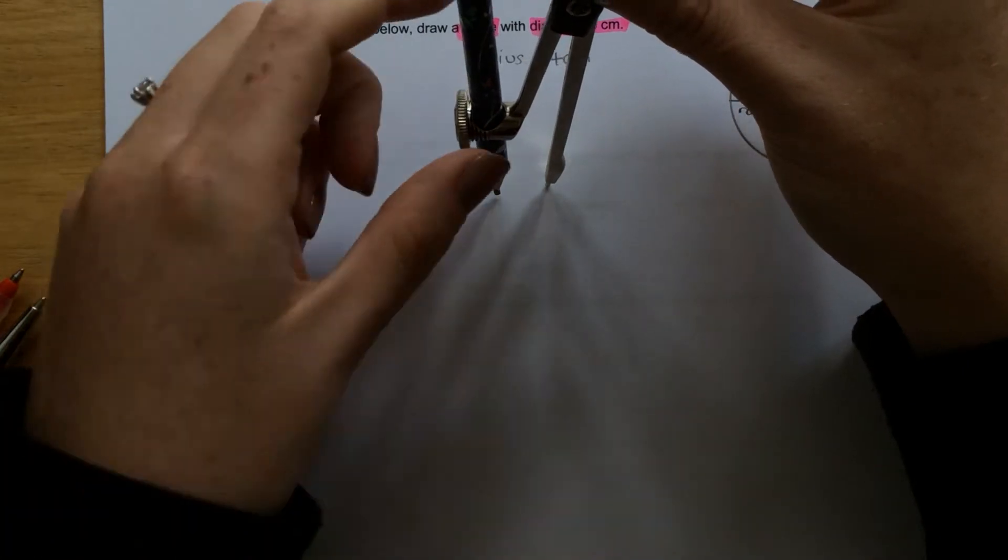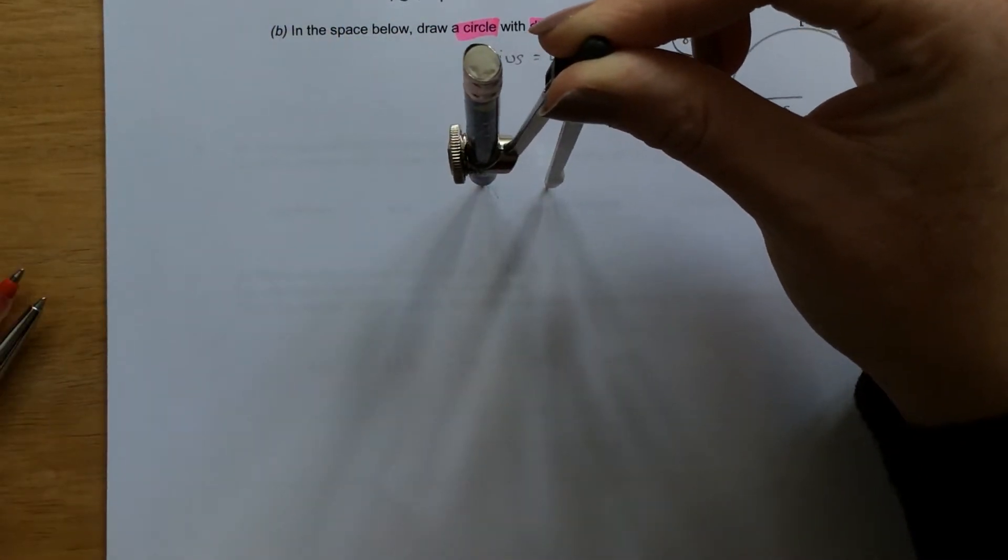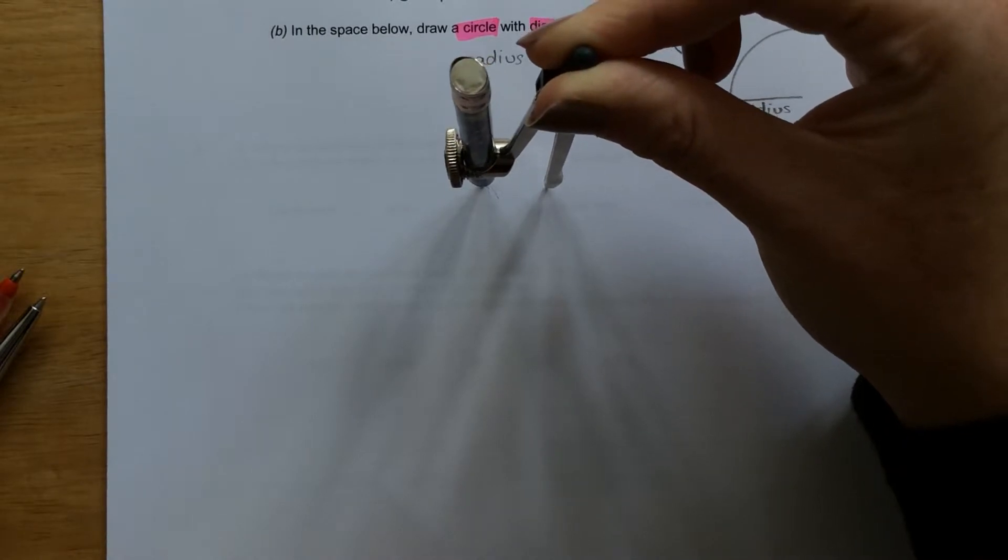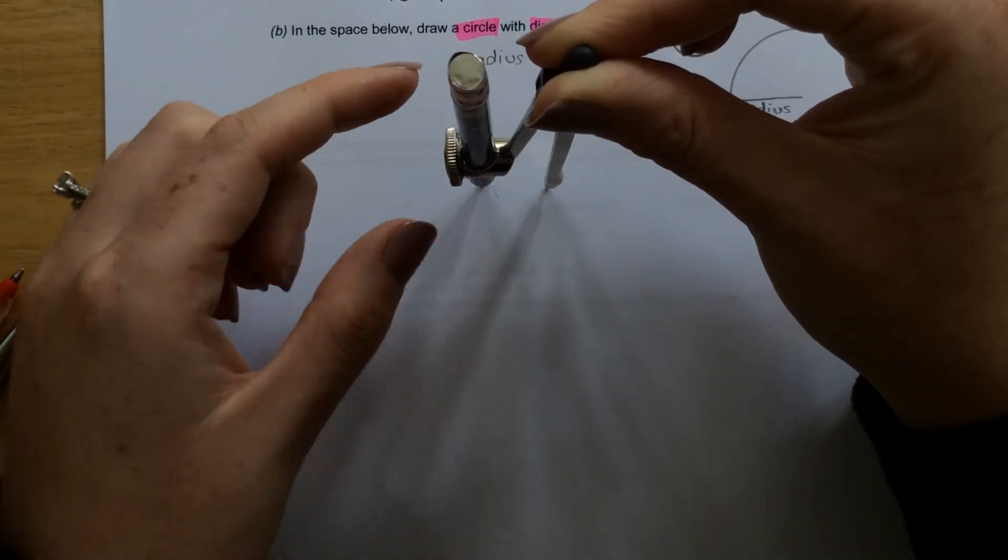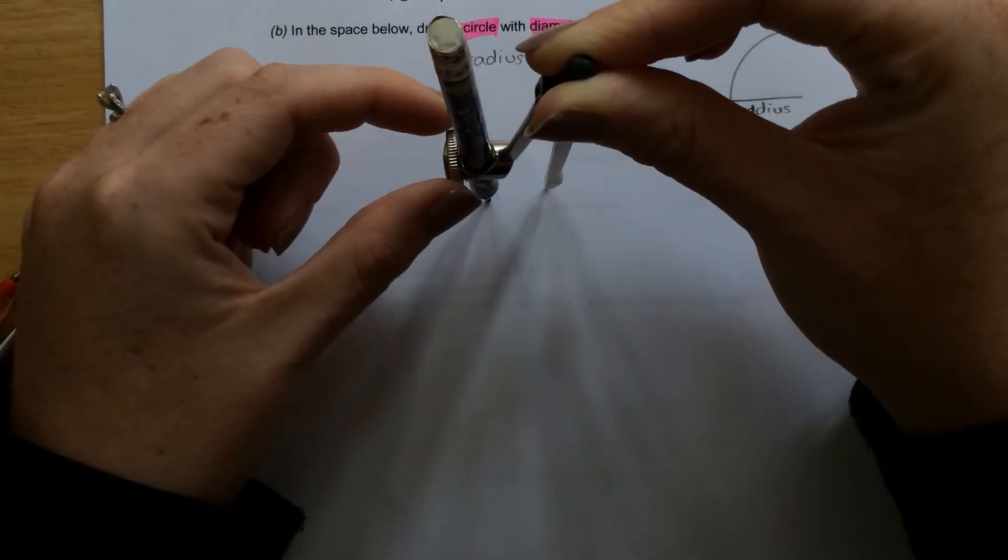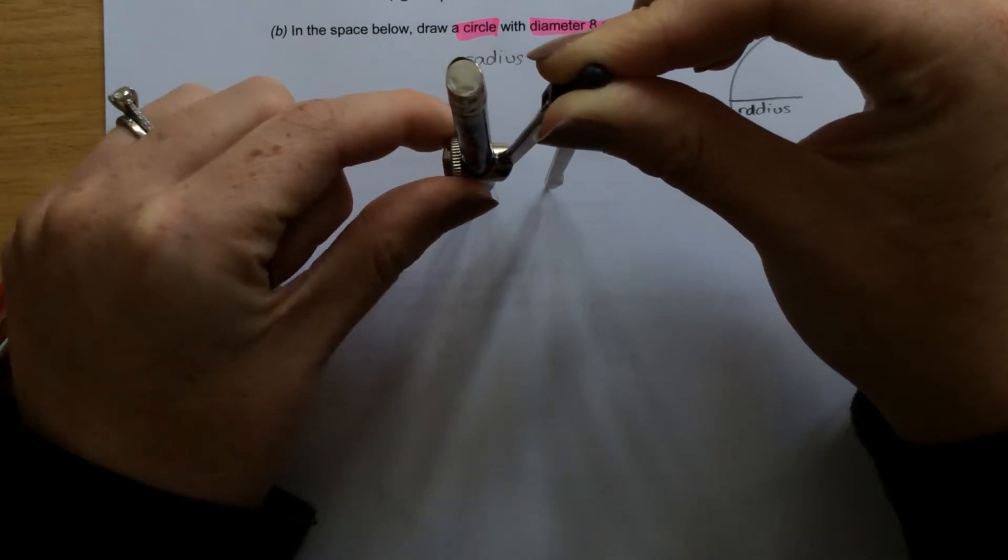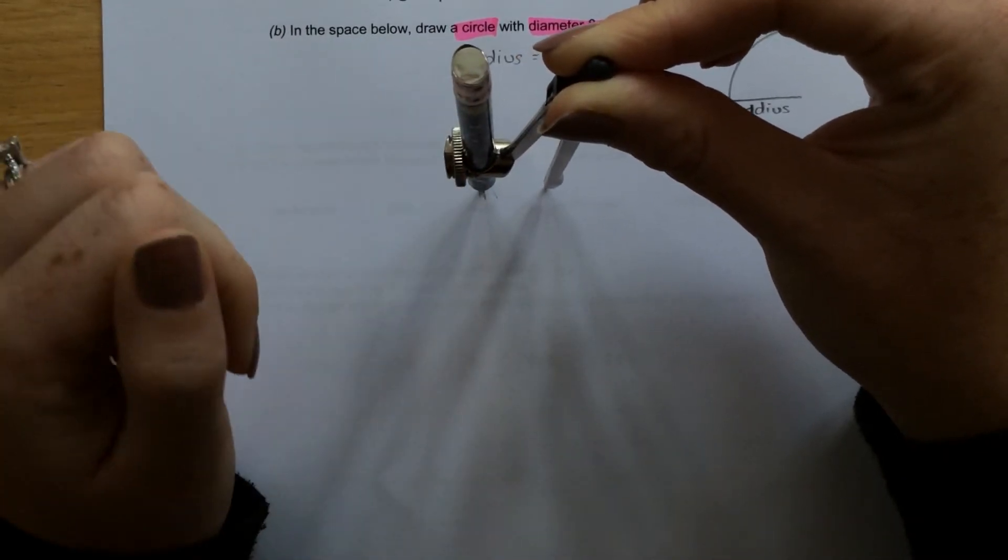So make sure your pencil is touching the page, so then at all parts of your circle, you know your pencil will make contact with the paper. Then you use this to tighten it up, so keep it on the page, and tighten until the pencil won't move.